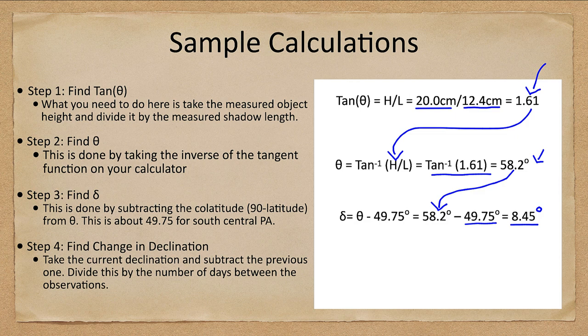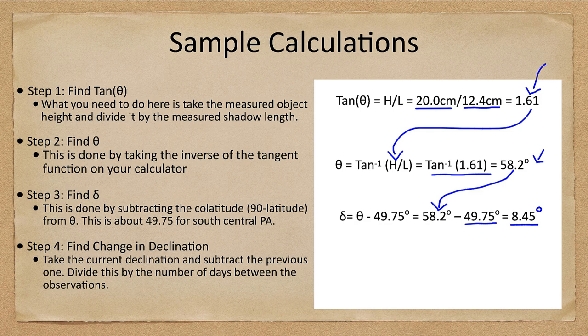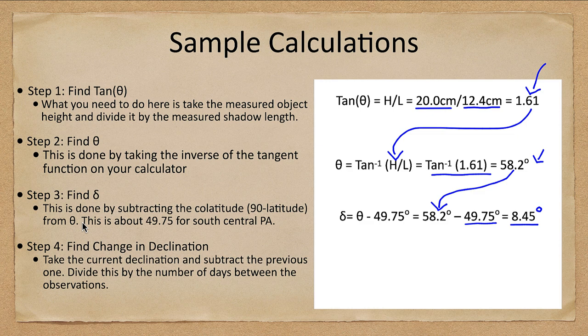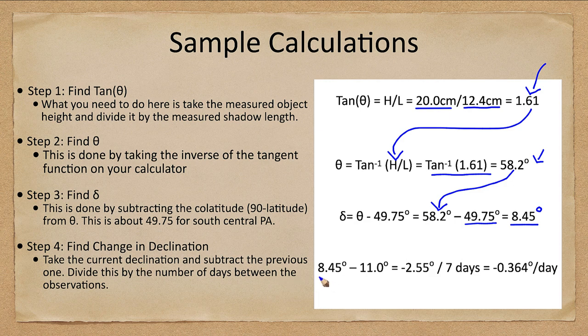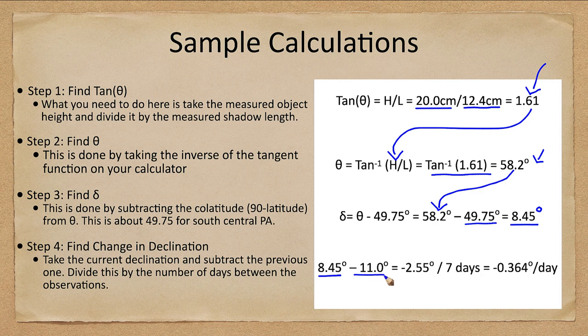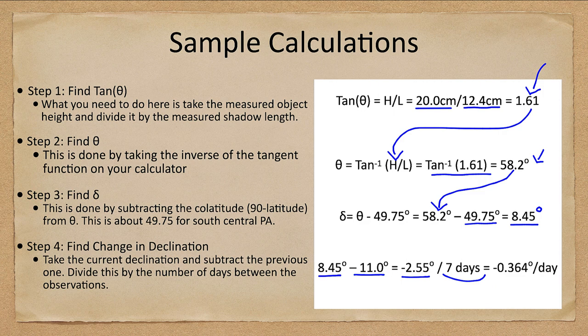Now we can actually find a change in declination. In order to do that, you take the current declination, the number that we just got, and we subtract the previous declination. So in this case, we take the 8.45 that we just had, subtract the 11 from the previous one. That gives us negative 2.55.